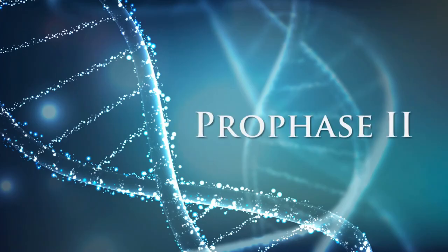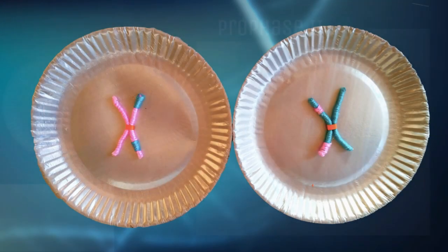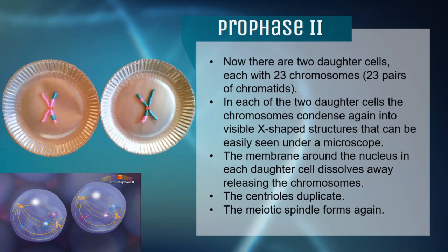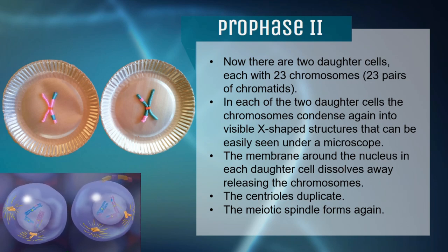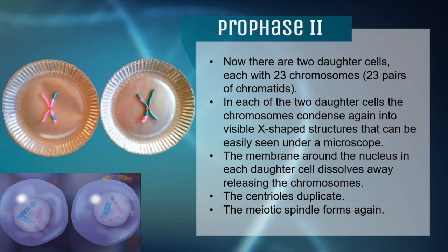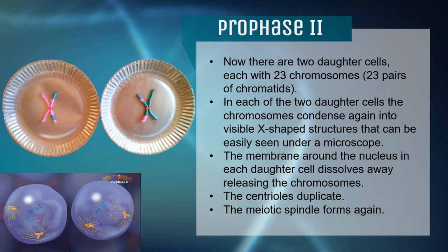Now we move on to the second part of meiosis, conveniently called Meiosis II. Meiosis II has the same names for its stages as Meiosis I, but they all end in II. In Prophase II, there are two daughter cells, each having 23 chromosomes, equal to 23 pairs of chromatids. These daughter cells go through the same process as in Meiosis I, except recombination and crossing over do not happen here.